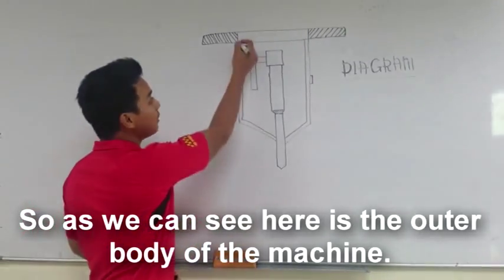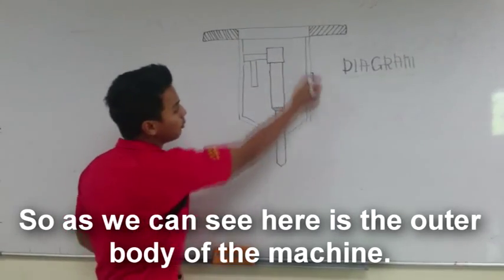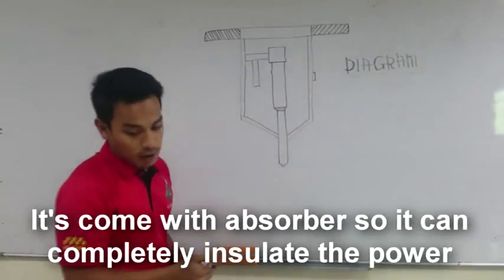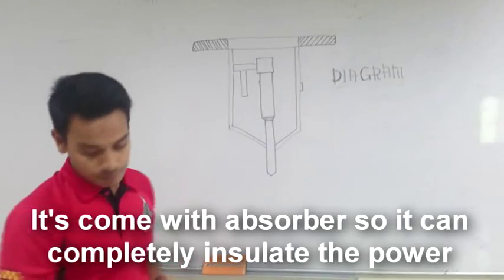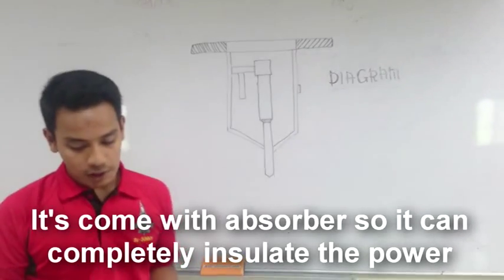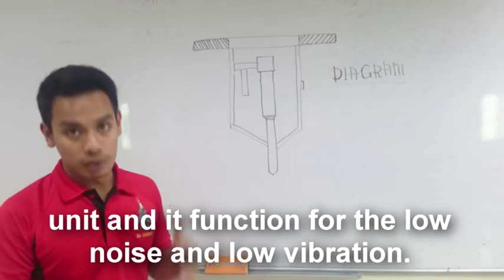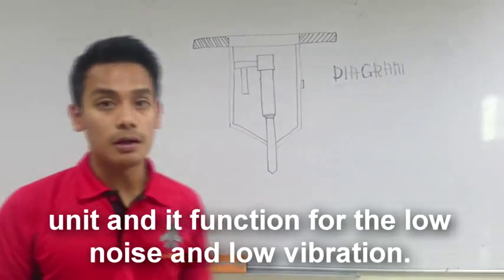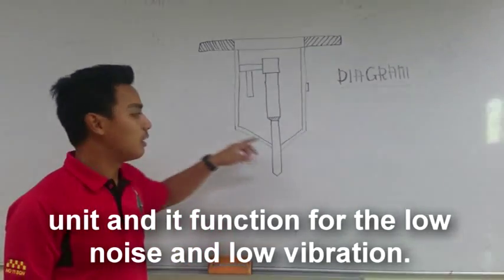As you can see here is the outer body of the machine. It comes with an absorber, so it can completely insulate the power unit and it functions for low noise and low vibration.